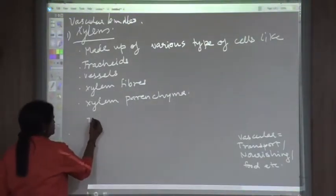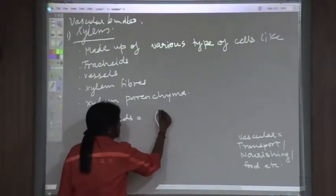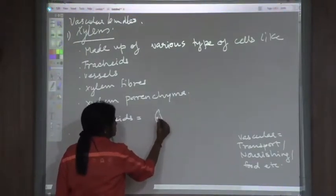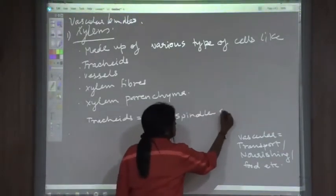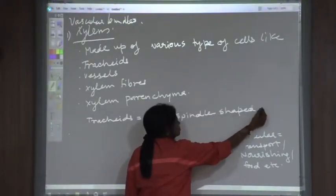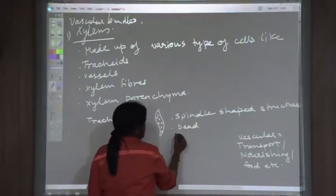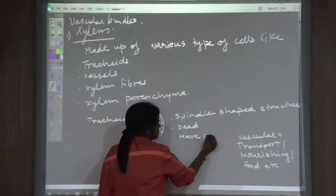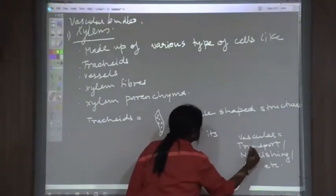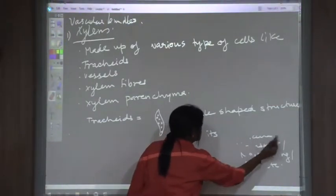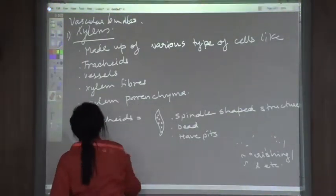Tracheids are one type of cell in the vascular system xylem. Tracheids are spindle-shaped structures — they have tapering pointed ends and they have pits. They will be conducting water through the pits only. They are dead tissue because they have lignin deposition in the cell walls, which makes them dead.